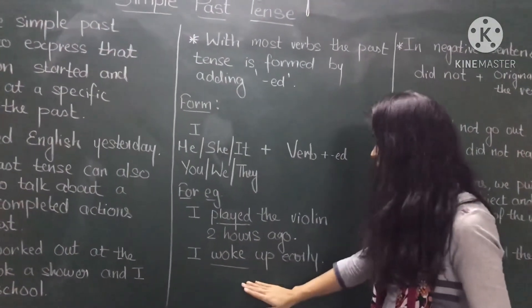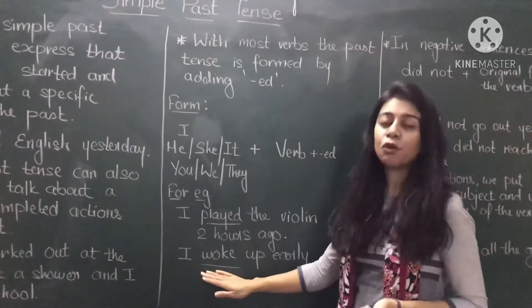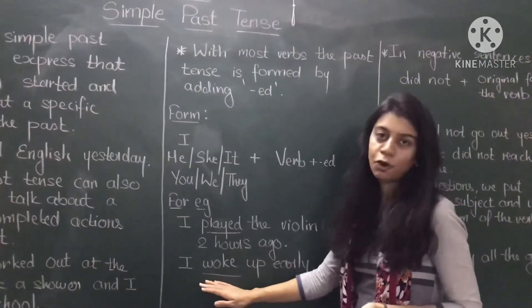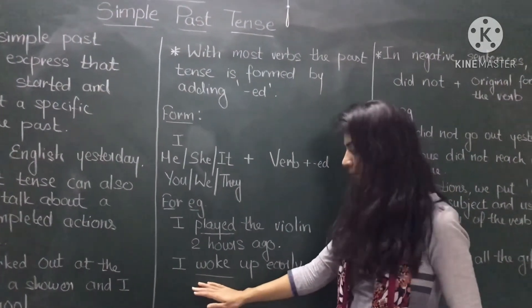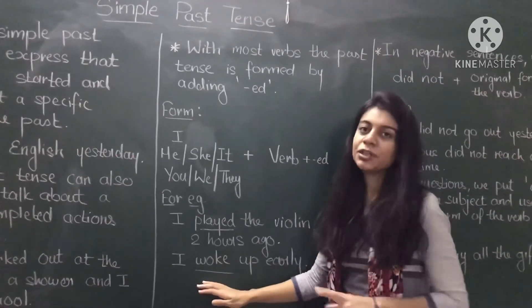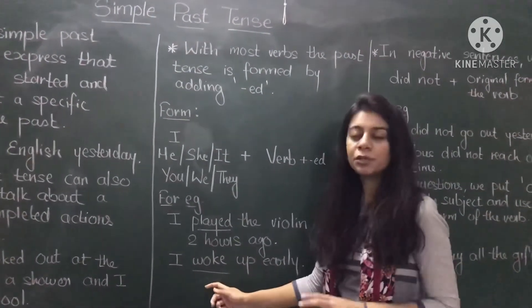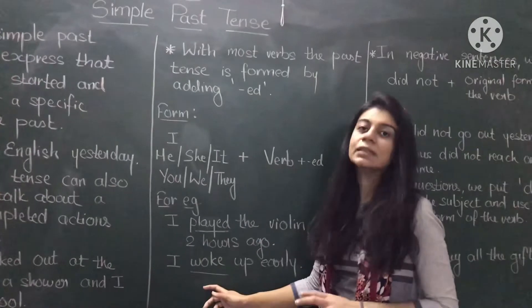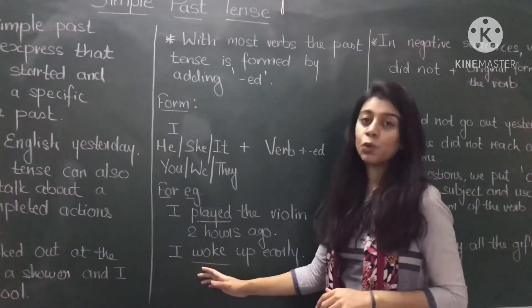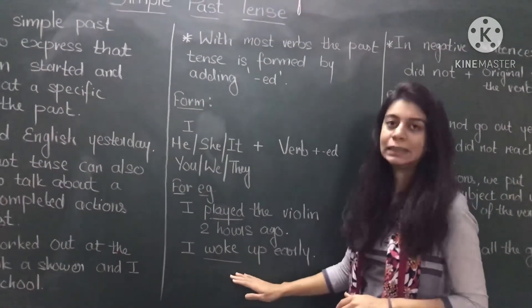For example, 'I woke up early.' Here 'woke' is the past form of the verb 'wake.' 'Wake' is the original form, while if we use it in simple past tense, we need to use 'woke.' So, 'I woke up early.'